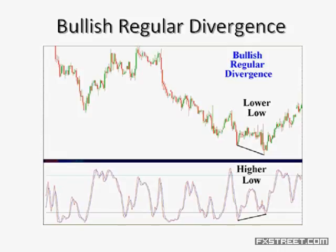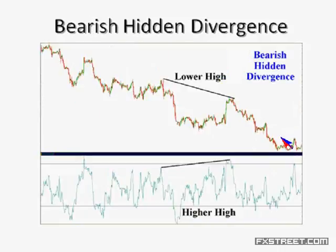Now let's talk about hidden divergence. Hidden divergence is quite different. A lot of people will say that hidden divergence is counterintuitive — it's not very easy to understand, but it's higher probability because it's a with-the-trend move. If you look at regular divergence, both bearish and bullish regular divergence are counter-trend opportunities — we're looking to play reversals. With hidden divergence, we're looking to play continuations of the trend.